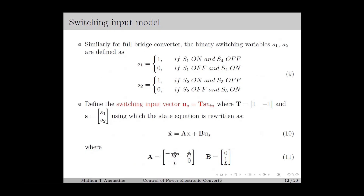Next, we derive the switching input model of the full-bridge converter. For the full-bridge converter, we use two binary switching variables S1 and S2 corresponding to each leg of the converter. The first leg consists of S1 and S4. The switching input vector Us is defined as T·S·VIN, where T is a transformation matrix and S is the vector of switching variables. If S1 equals 1 and S2 equals 0, then T·S·VIN equals VIN. If S1 equals 0 and S2 equals 1, then T·S·VIN equals minus VIN. Using this scalar switching input Us, we define the state equation as equation number 10, where A and B are as in equation number 11.